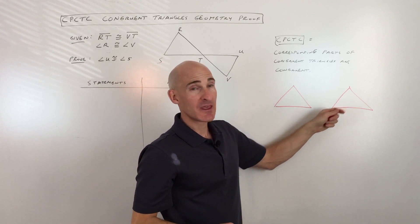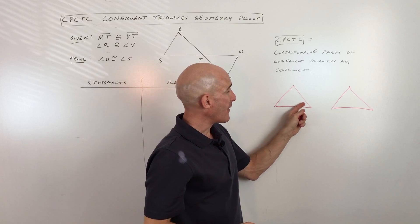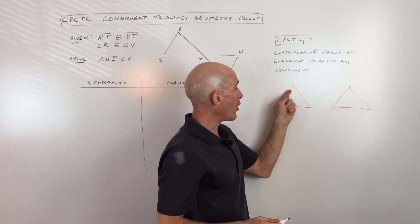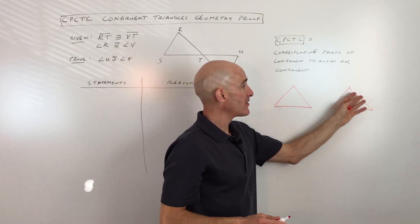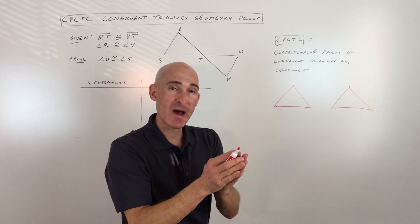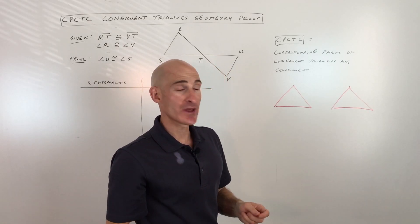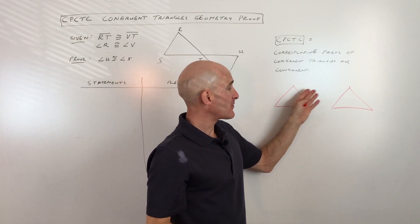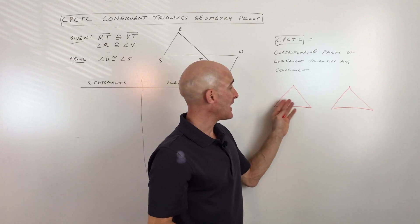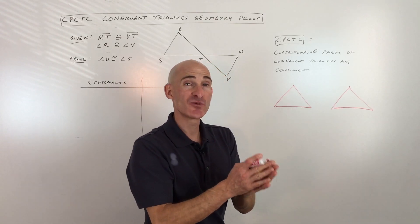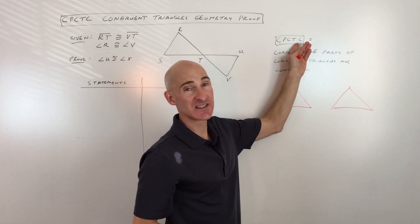If I can do that, then what that means is that every part of this triangle, meaning all three angles and all three sides, the ones that they match up with or correspond with, they're going to be congruent. So first step is to prove the triangles congruent, then everything that matches up or corresponds will be congruent also, and that's what the CPCTC tells us.